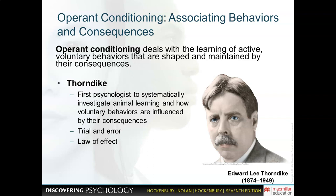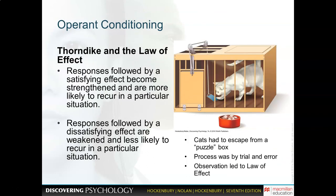One important distinction: operant conditioning involves voluntary conditioning, whereas classical conditioning is involuntary. Researcher Thorndike studied operant conditioning using a puzzle box — he would put cats in them, and through trial and error the cat would learn to press a lever that opened the door and allowed it to get to food. The cat's behavior became gradually modified in order to reach a goal.